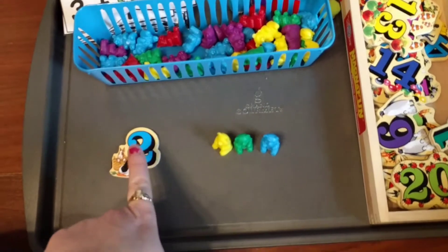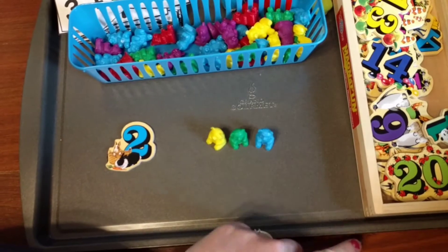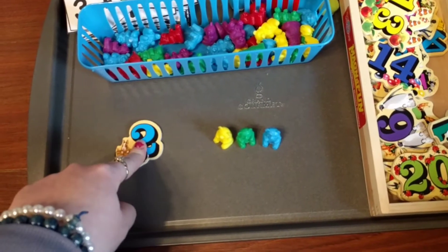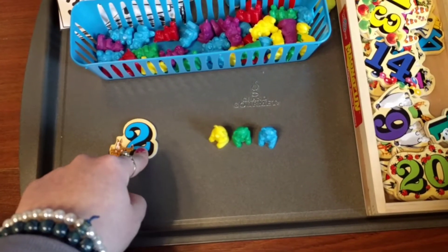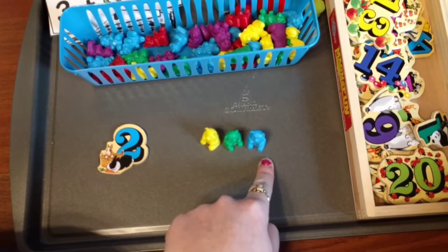How much does that make? So they already know they have 2, so they say 2, 3, 4, 5. They count on. So they're not going to count the 2 because we already know we have 2. 2, 3, 4, 5. So 2 plus 3 equals 5.